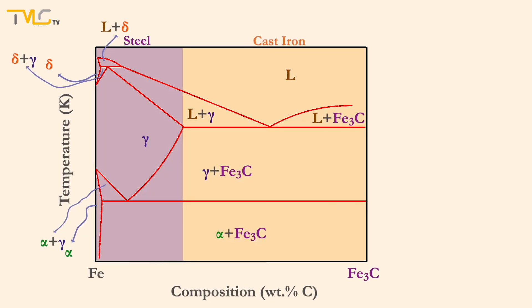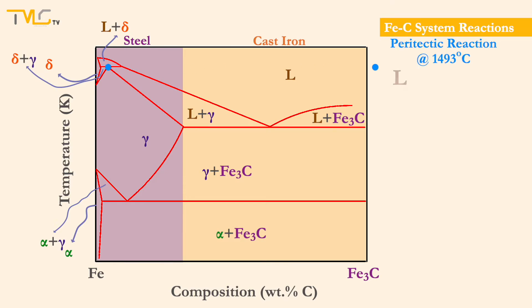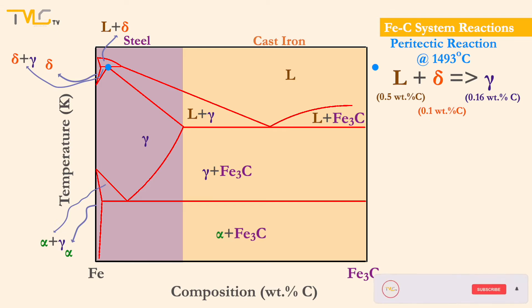First of all, let's look at the reactions occurring in the iron-carbon binary system. There is a high-temperature peritectic reaction occurring at around 1493 degrees Celsius, where the liquid phase having 0.5 weight percent carbon reacts with the delta phase having 0.1 weight percent carbon, forming a gamma phase having 0.16 weight percent carbon loading. Yet this reaction is not as important as the other reactions for many engineering purposes, since most metal forming and heat treatment processes occur at lower temperatures.